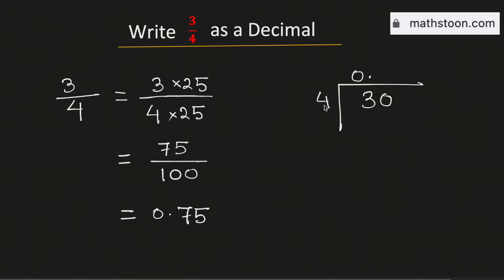Now we know that 4 goes into 30 seven times. If we subtract, we get 2. Again, we need to bring one zero here, and we know that 4 times 5 is 20.